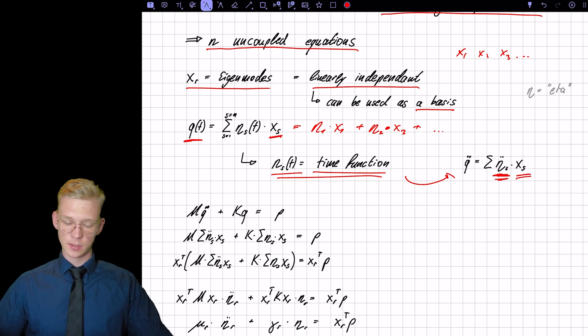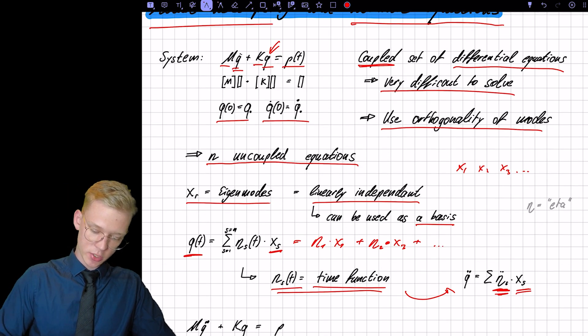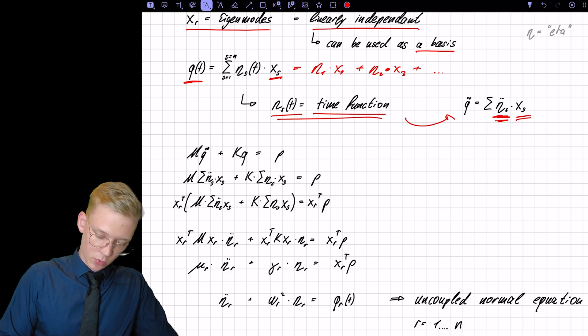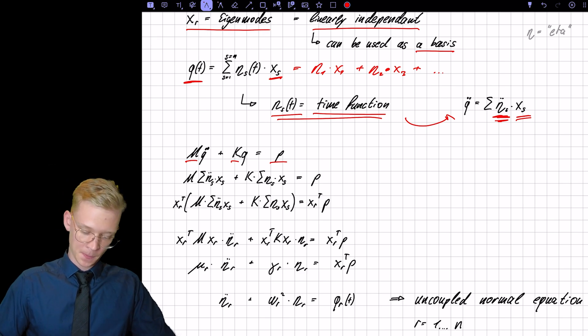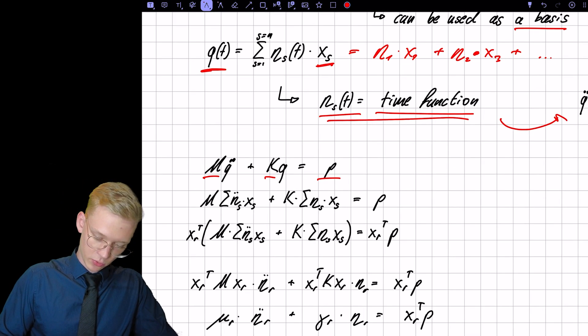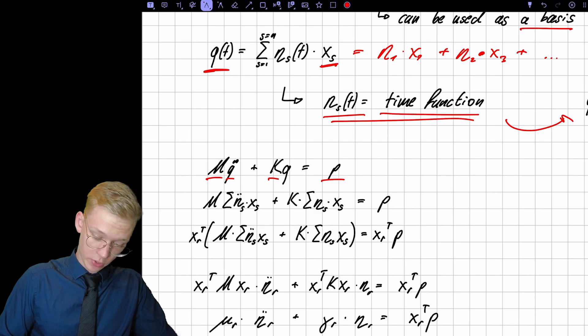So let's put that into our equation that we had here at the beginning. So we have M Q double dot plus K Q equals P.